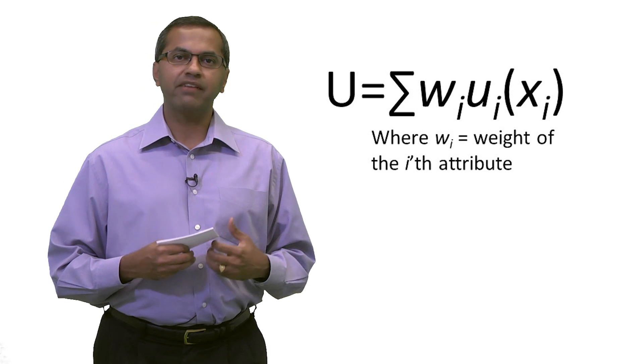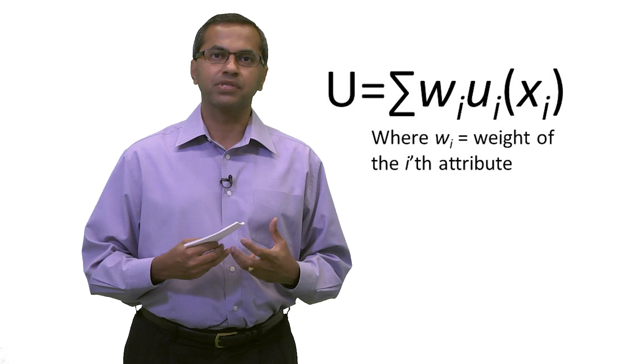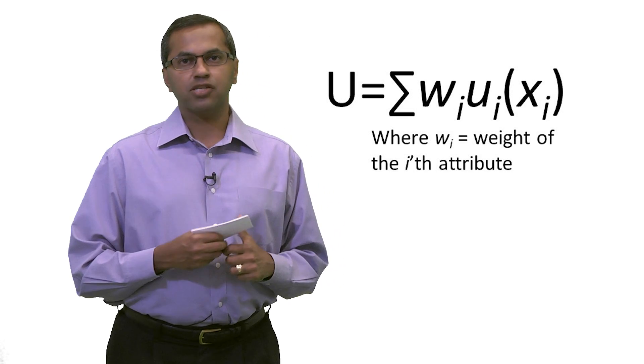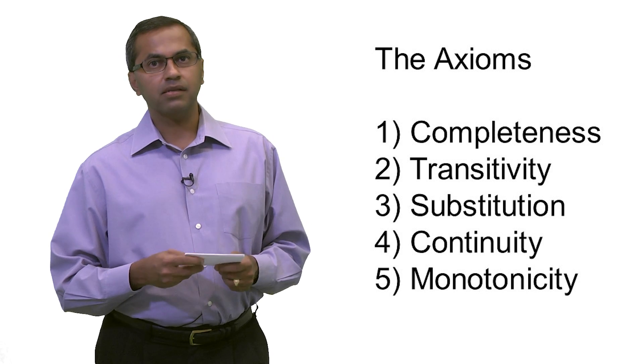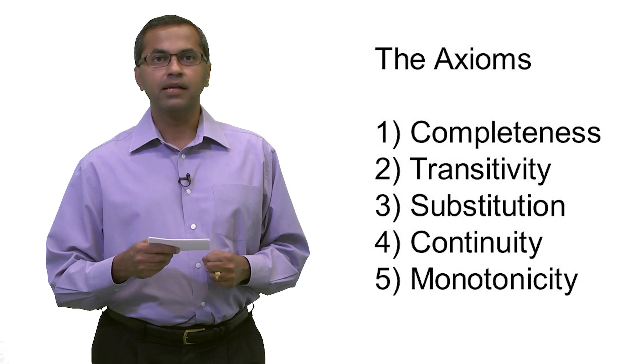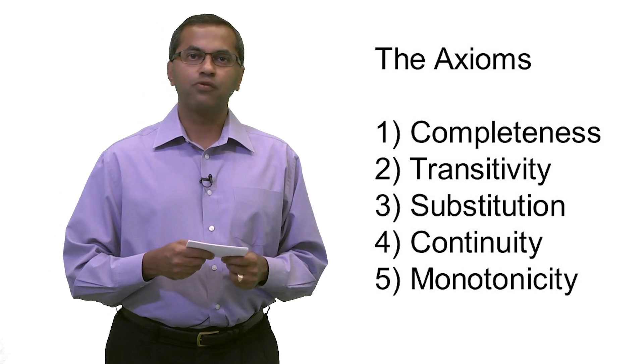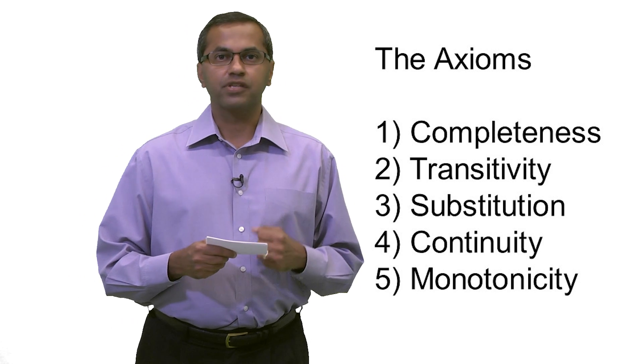This theory relies on five principles or five axioms that underlie rational decision making. Here are the five axioms: the first one is called completeness, the second one is transitivity, the third is substitution, the fourth is continuity, and the fifth is monotonicity.